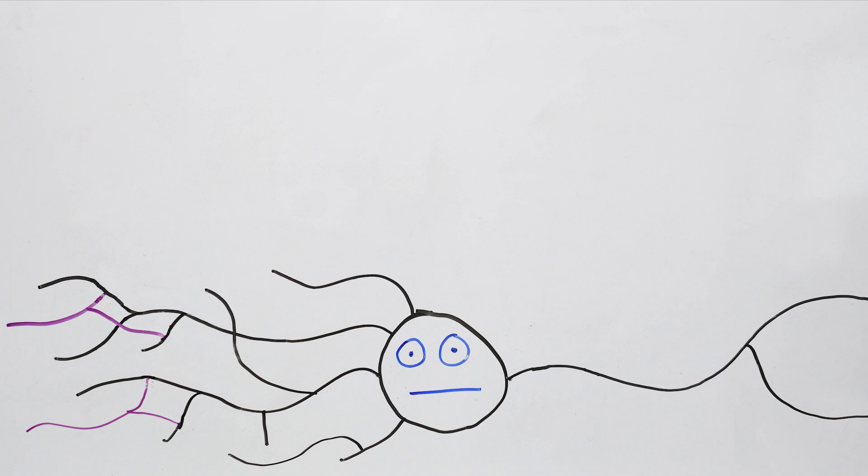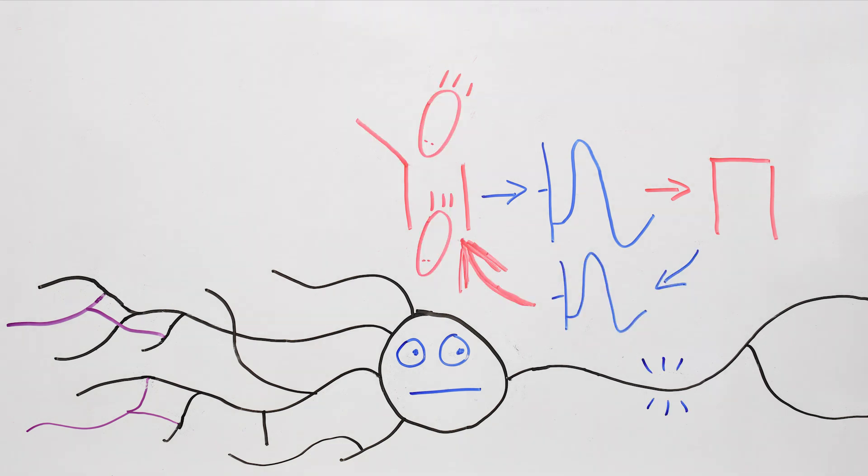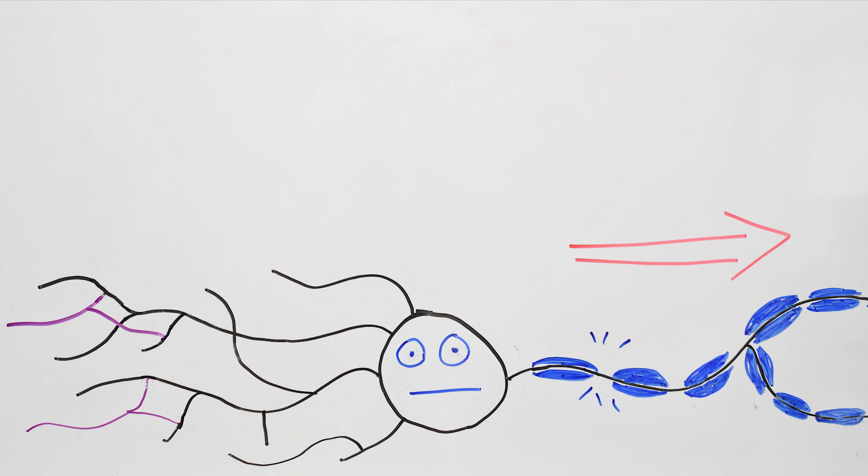So that's it! Spikes happen because ion channels open, let in some ions, and change the voltage. And spikes move through neurons because this change in voltage triggers more channels to open, which again changes the voltage, triggers the next set of channels, and so on, and so on. And myelin helps the spikes move quickly over long distances. That's it!